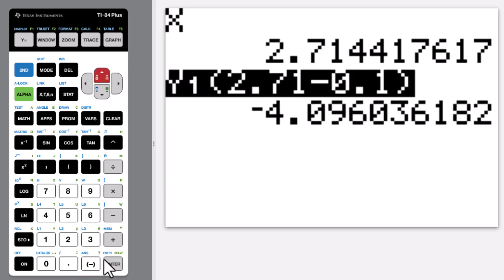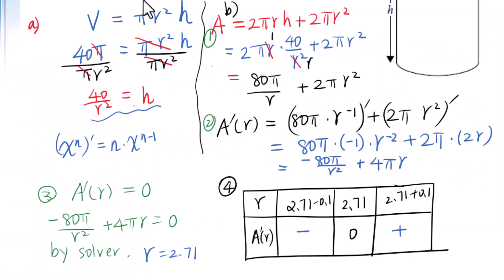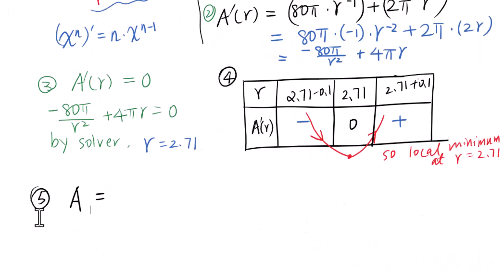Change this minus sign into plus, enter - it's positive. Negative, positive. Derivative is negative means the graph going down then going up, so local minimum at r equals 2.71.